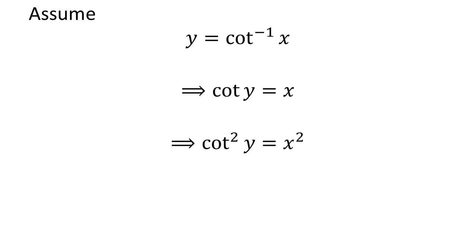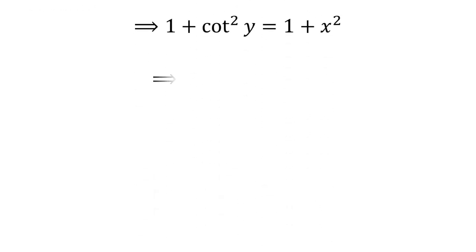Squaring both sides gives us cotangent squared of y equals x squared. Adding 1 to both sides gives 1 plus cotangent squared of y equals 1 plus x squared. By the trigonometric identity, 1 plus cotangent squared of y equals cosecant squared of y. So cosecant squared of y equals 1 plus x squared.